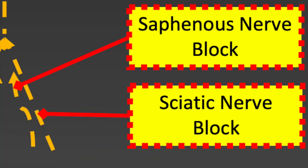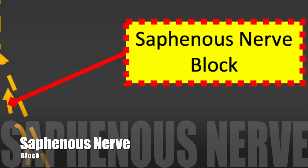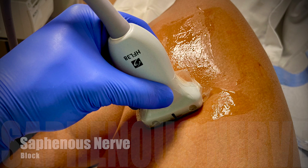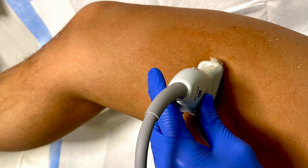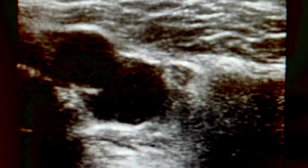Next are the lower extremity nerve blocks: the saphenous and sciatic nerve blocks. There are two because one basically covers one half of the leg and the other covers the other half. To numb the whole leg, we would have to block both, but that is not always necessary. The saphenous nerve block, also known as the adductor canal block, is commonly used for knee replacement surgery and it is a great option for you to participate in physical therapy without much weakness.